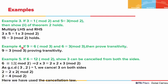Example 4: given 9 is congruent to 6 mod of 3 and 6 is congruent to 3 mod of 3, prove transitivity. We can see 9 is congruent to 6 and 6 is congruent to 3, so 9 is congruent to 3 mod of 3. Indeed, 9 minus 3 is 6 and 6 is divisible by 3.